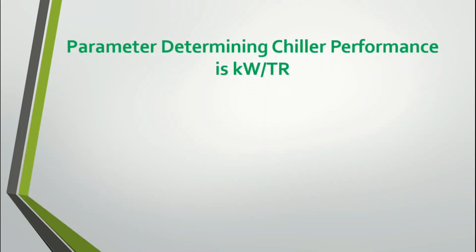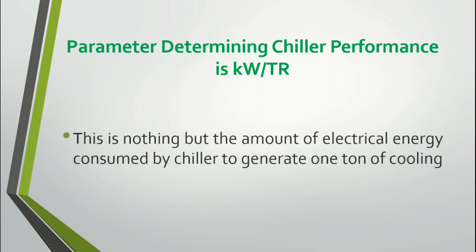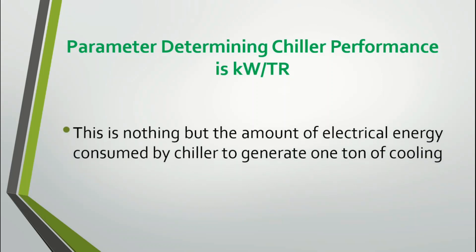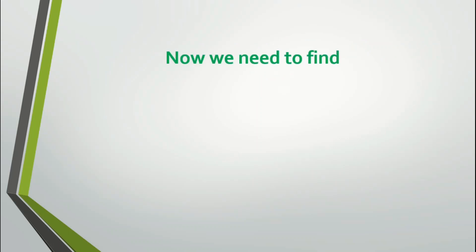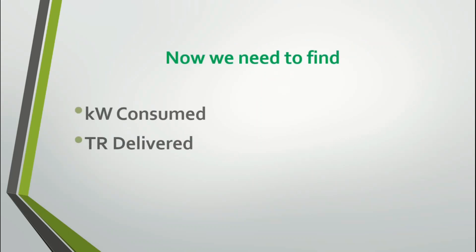The parameter determining chiller performance is kilowatt per TR. This is nothing but the amount of electrical energy consumed by the chiller to generate one ton of cooling. So we need to find how much kilowatt is consumed by the chiller and what is the tonnage delivered.